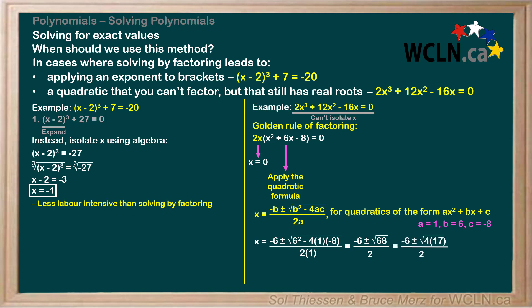We can rewrite 68 as 4 times 17. Since the square root of 4 is 2, we end up with (-6 ± 2√17) / 2. Then we can divide both the numerator and denominator by 2 to give us -3 ± √17. This gives us a total of 3 solutions.